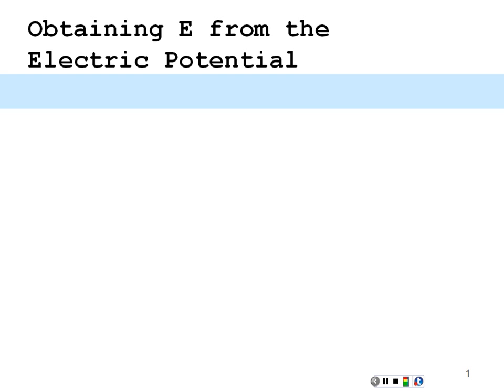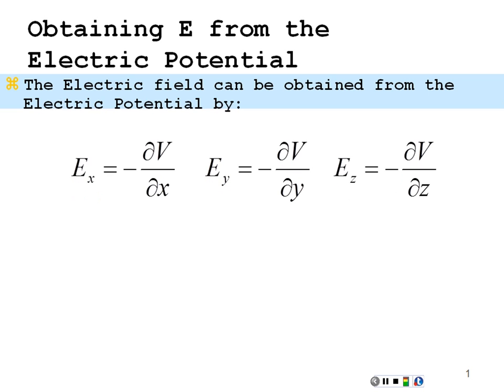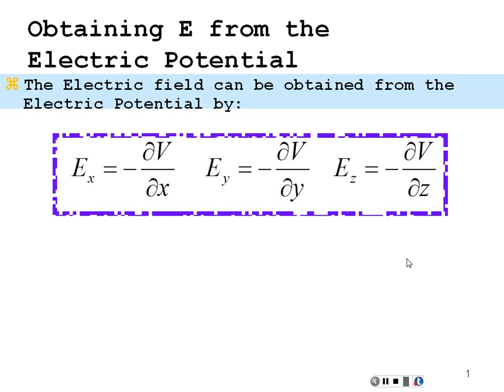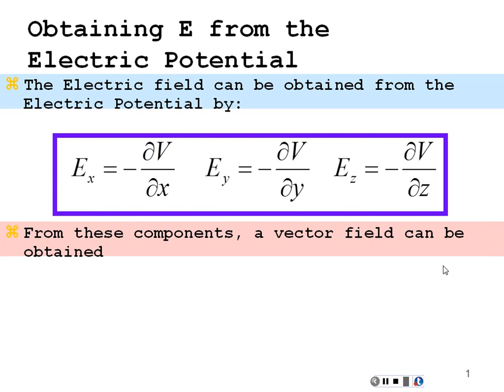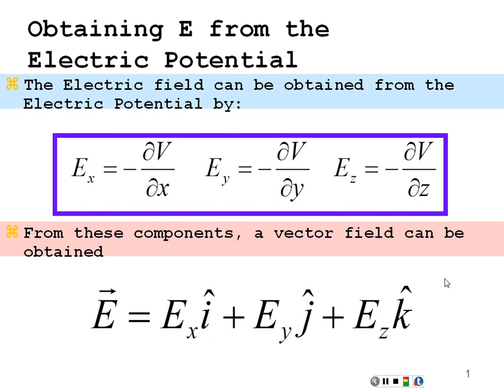At the end of the last video we saw that we could get a vector electric field from a scalar potential. The components of the electric field are equal to the negative partial derivative of the scalar potential, in this case v. Hence we can construct a vector from those negative partial derivatives — the gradient — the negative gradient of the potential.